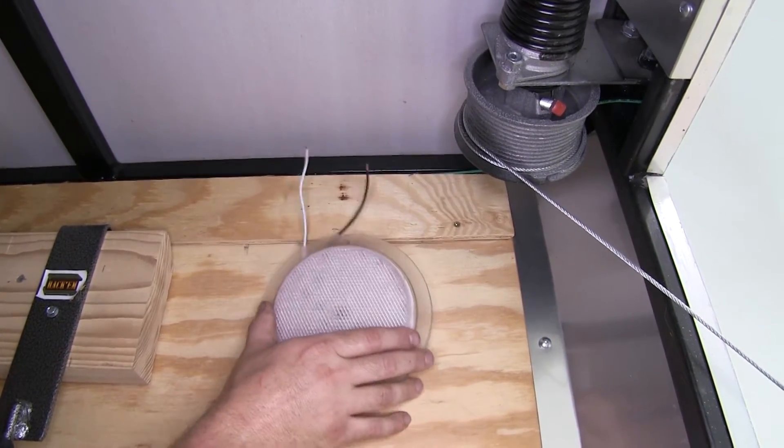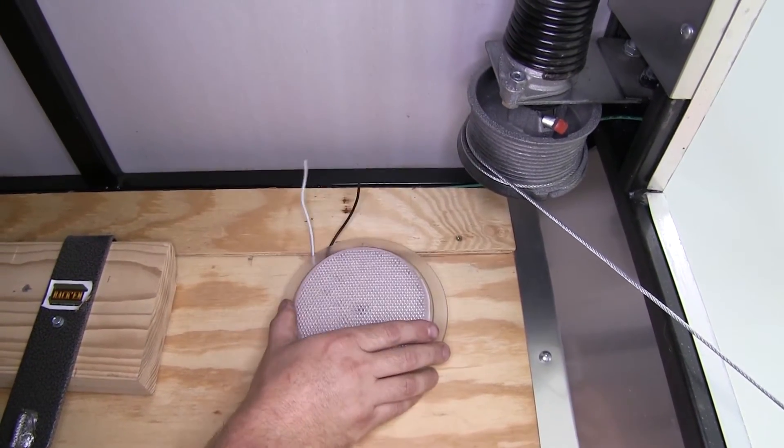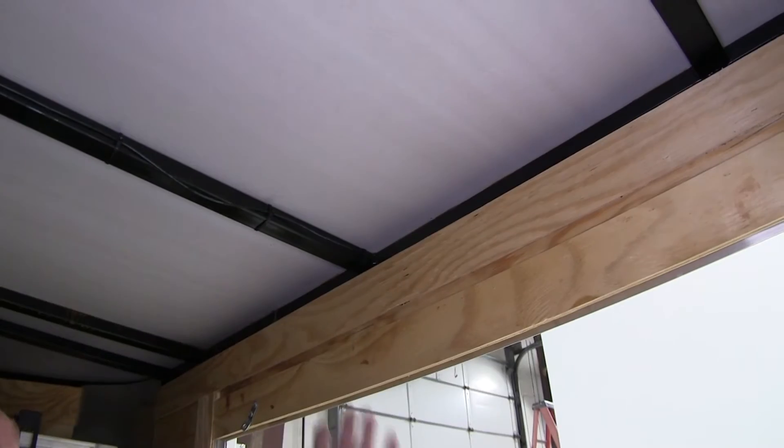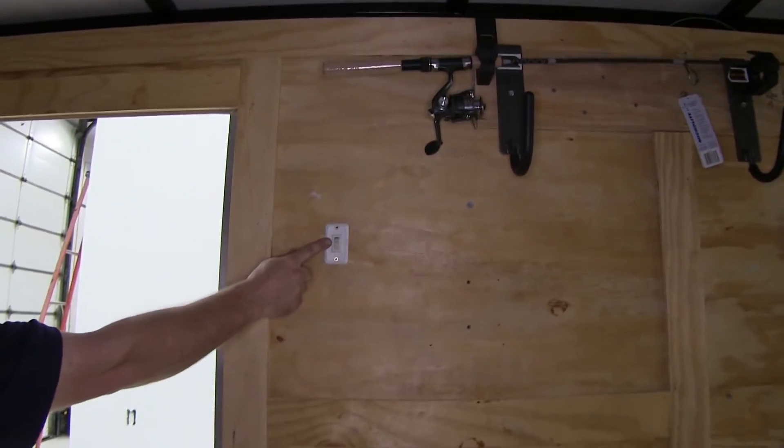We'll run our power wire back here to our location and then we can mount our light. Here's the power wire in our trailer and it's run over to a switch right over here on the wall. The switch controls another light that's already in our trailer.